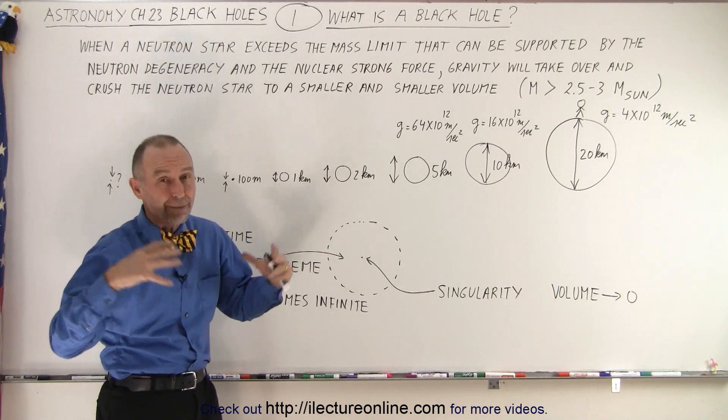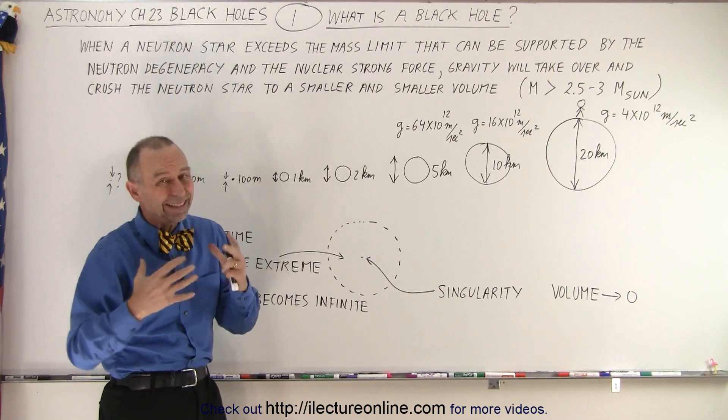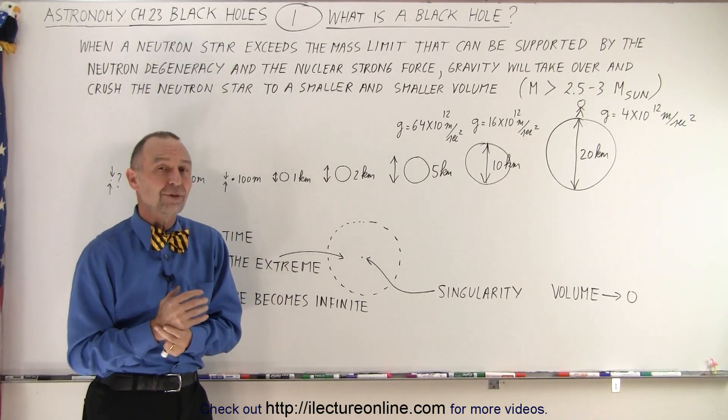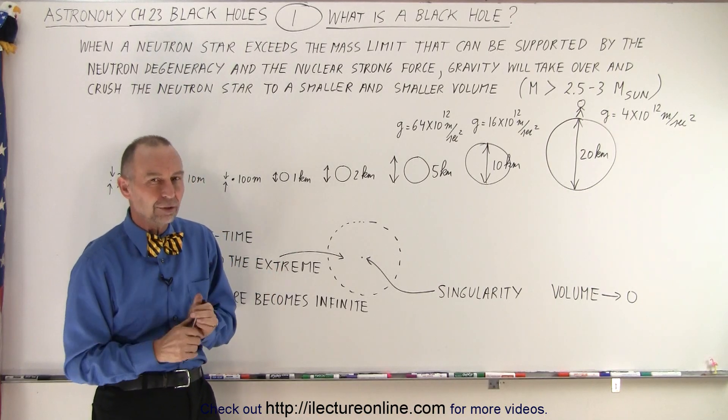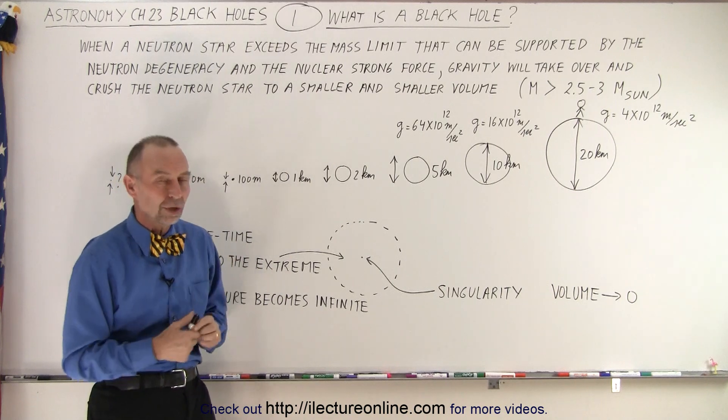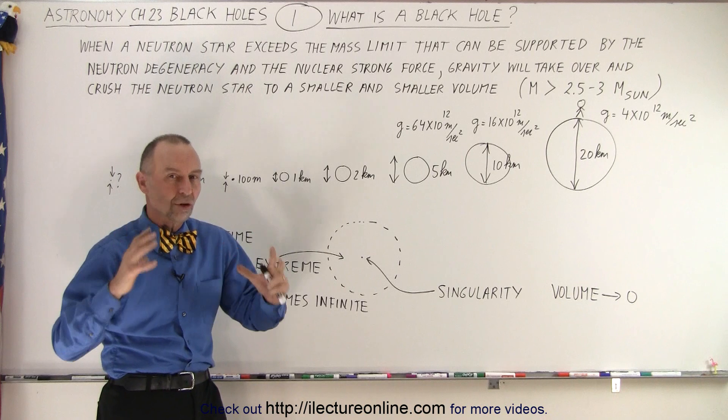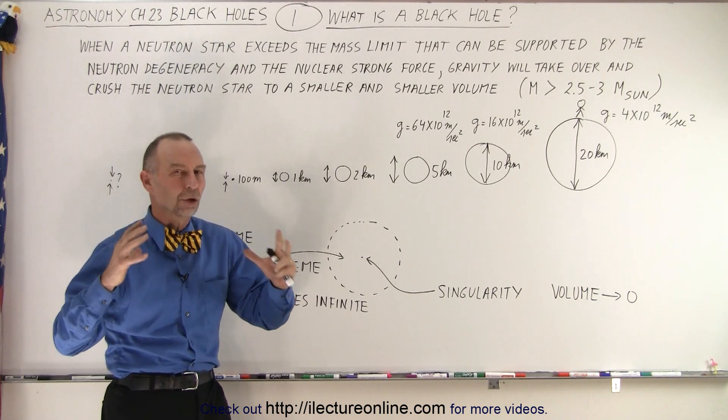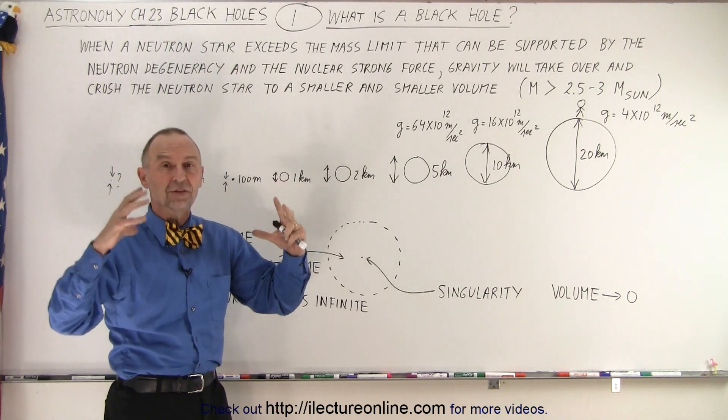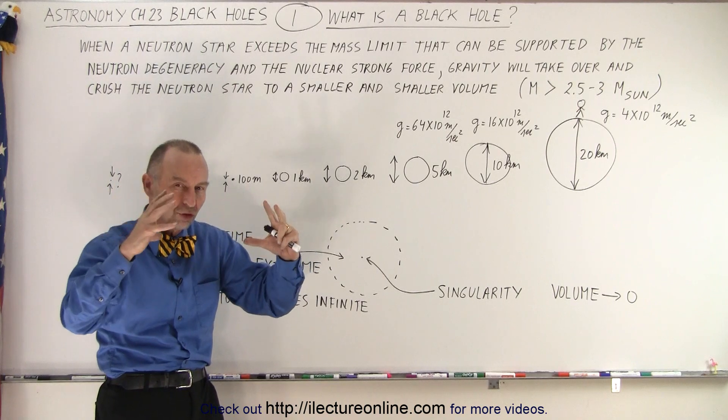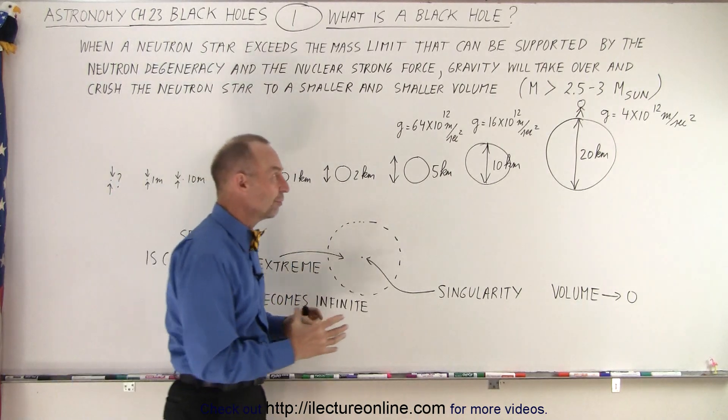But at the point where the mass of the neutron star exceeds about 2.5 to 3 times the mass of the Sun, it depends on several other properties within the neutron star, at that point, the nuclear strong force and the neutron degeneracy can no longer hold back and gravity wins. At that point, gravity begins to squish down the neutron star even further.